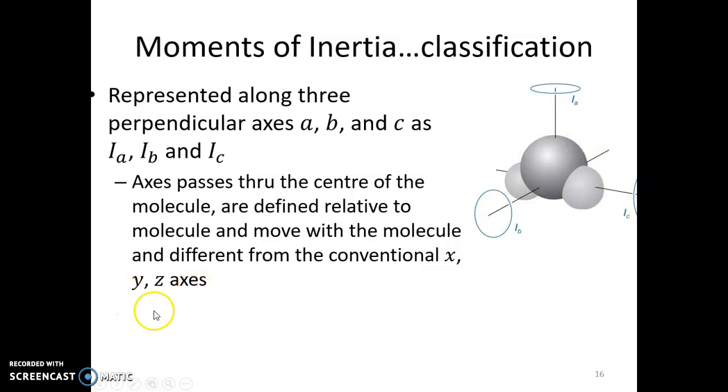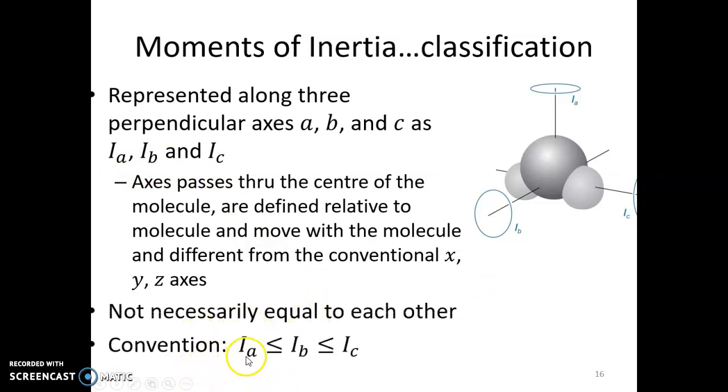For along each axis, we have Ia, that's the principal moment of inertia along the a axis, moment of inertia along the b axis, and moment of inertia along the c axis. They are usually not equal to each other, but the convention is that Ia is less than Ib and is less than Ic.